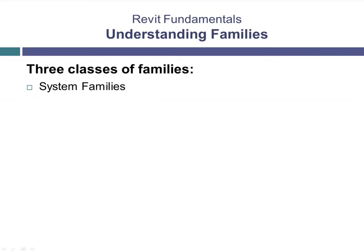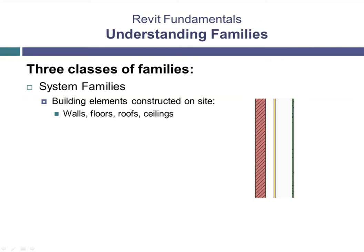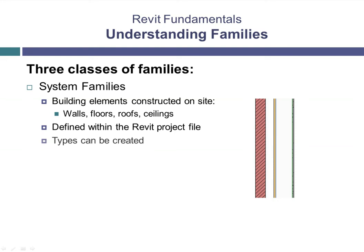System families form the basic building elements, such as walls, floors, roofs, ceilings, and other elements that you would assemble on a construction site. System families are defined within the Revit project file, not in an external family file. You cannot create or delete system families; however, you can create multiple family types in a system family. These types are relatively easy to create and can be copied to other project files. For example, if you create a custom wall, that family will only exist in the Revit project file in which it was created, but you can easily create a project template or transfer the wall type to another project.